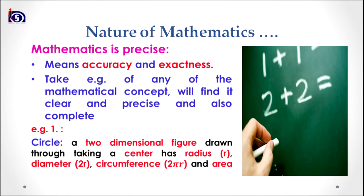Coming to the third characteristic in the nature of mathematics: mathematics strives for precision. Precision means accuracy and exactness, and mathematics aspires for accuracy and exactness in its process. Precision has three qualities: clarity, exactness, and completeness.